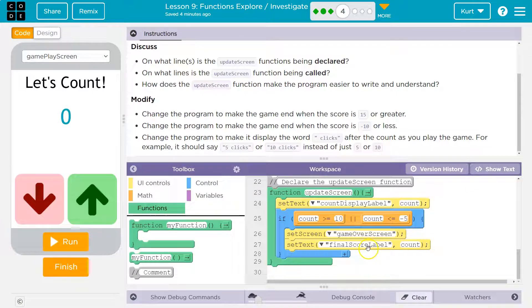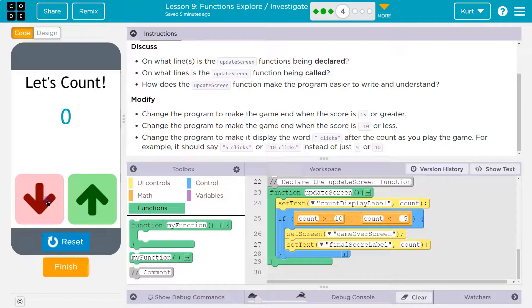Is my score updating? Oh, okay. So if count is greater than or equal to 10, or it's less than negative five, set screen. Oh, okay. One, two, three, four, five.